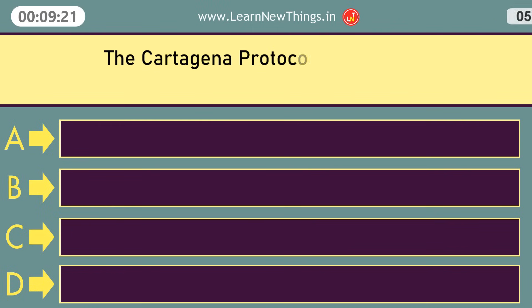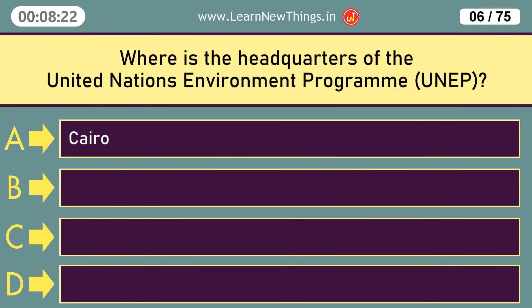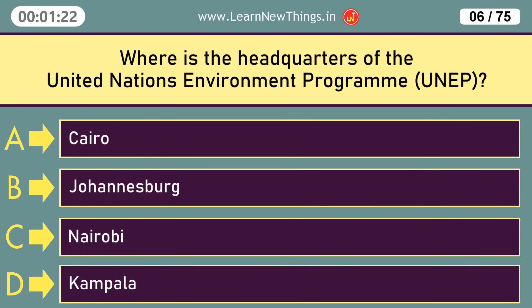The Cartagena Protocol on Biosafety came into force in which year? 2003. Where is the headquarters of the United Nations Environment Program? Nairobi.